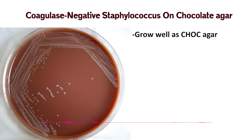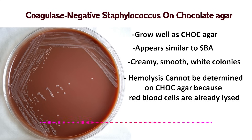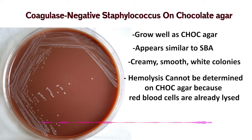Chocolate agar is enriched, so CoNS have no problem growing there, and their appearance is very similar to SBA — creamy, smooth, white colonies. But there's a crucial catch: chocolate agar is made with red blood cells that have already been lysed during heating to release growth factors. Because the cells are already lysed, you completely lose the ability to determine if the bacteria itself is causing hemolysis. So you can't distinguish hemolytic S. haemolyticus from non-hemolytic S. epi just by looking at chocolate agar. For that critical hemolysis question, you still need your SBA plate.